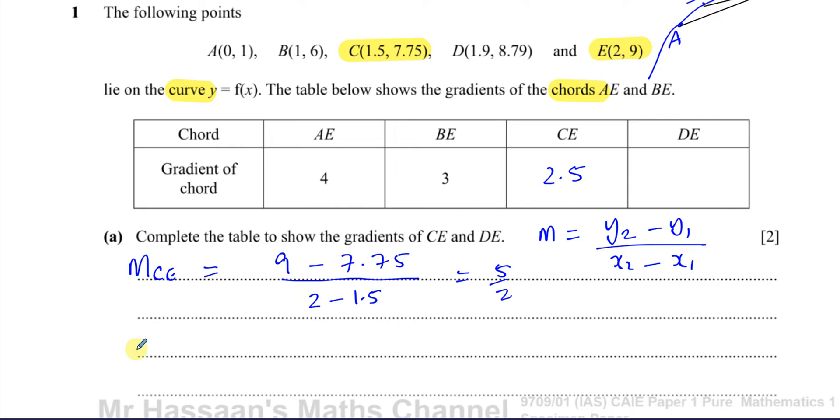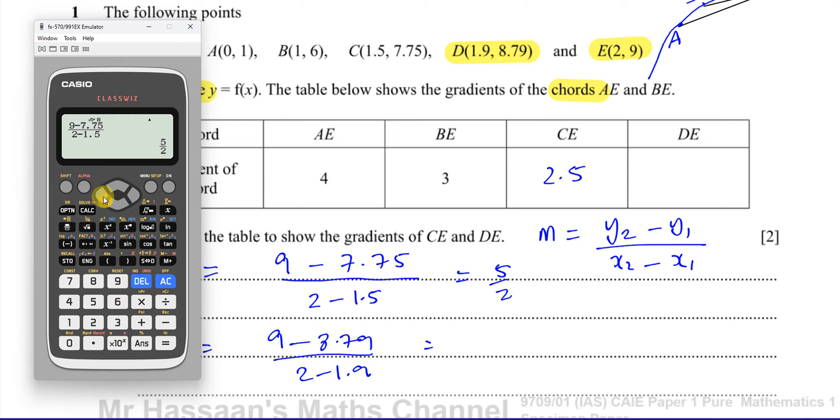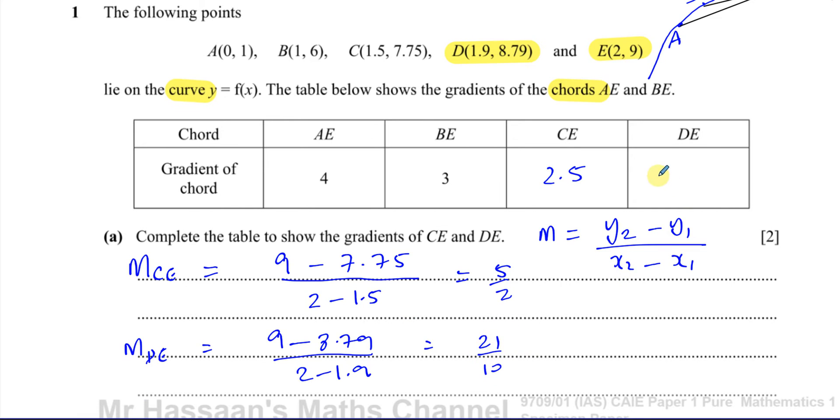And then we've got to find the gradient between D and E, so MDE. So now we're going to look at D and E. So again, it's the change in Y, which is 9 minus 8.79, divided by the change in X, which is 2 minus 1.9. So we have 9 minus 8.79 divided by 2 minus 1.9. And that gives us 21 over 10, which is 2.1. That's 2.1.